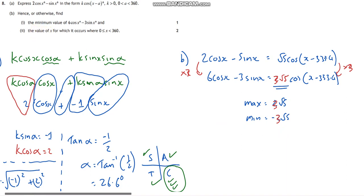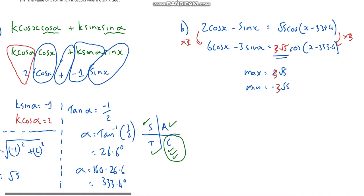And calculate the x value for which that occurs. So now what I have to do is solve my function. So I'll do question c. So I'm saying that I've got 3 root 5 cos x take away 333.4, and I want to know when is that equal to—and we're looking for the minimum value, aren't we—so when is that equal to negative 3 root 5? Well, divide both sides by 3 root 5, so I'm going to get cos x take away 333.4, that's going to end up with negative 1.